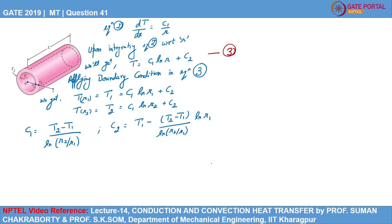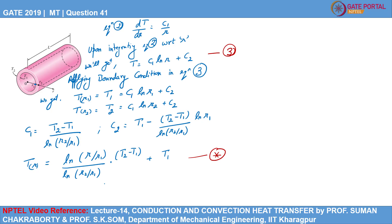Substituting the values of C1 and C2 into equation 3 and rearranging, we get the variation of temperature within the pipe. Temperature as a function of radius is given by equation star, where you can put any value of radius R (ranging from R1 to R2) and it will give you the temperature at that particular radius.